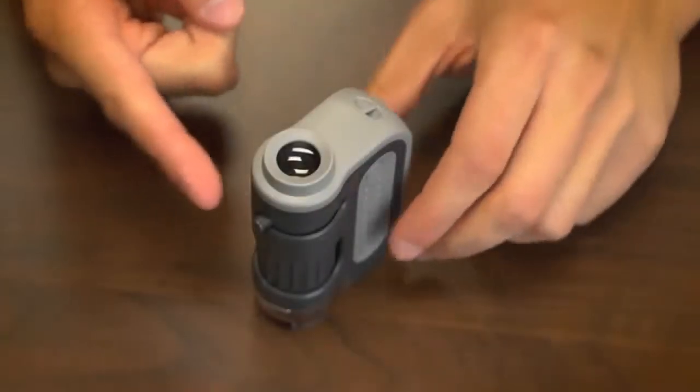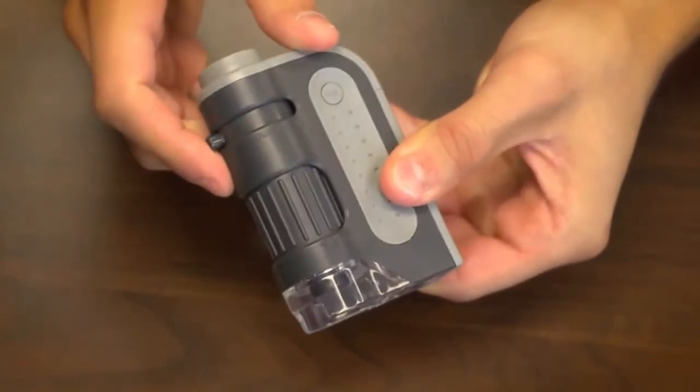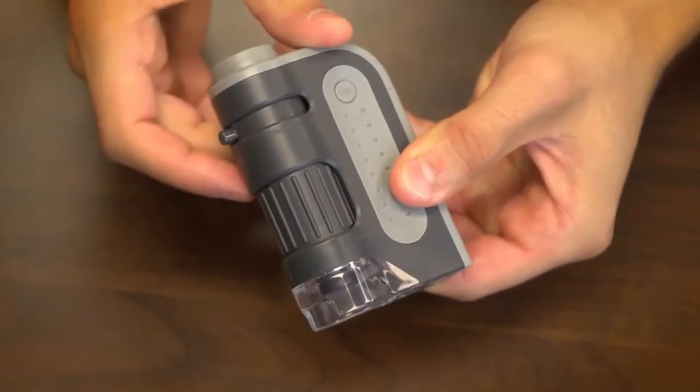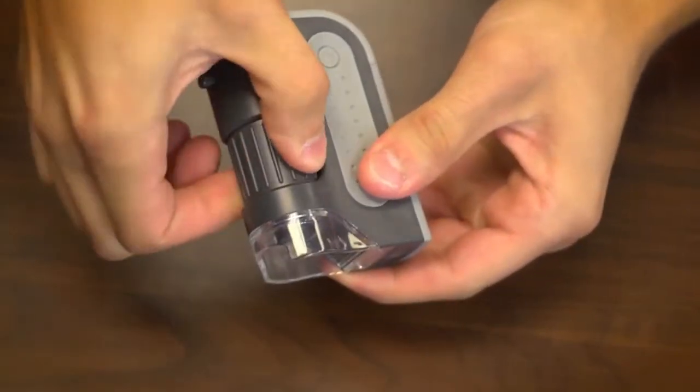You got this little knob here at the top that slides back and forth and is used for changing magnification. Below that we have a nice wide focus adjustment wheel which wraps around the body, is really good to give you that extra control and focusing.